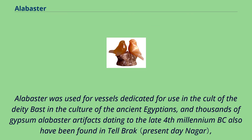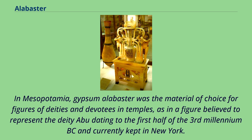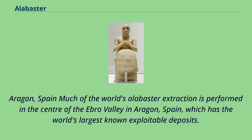Alabaster was used for vessels dedicated for use in the cult of the deity Bast in ancient Egyptian culture, and thousands of gypsum alabaster artifacts dating to the late 4th millennium BC have also been found in Talbrak, in Syria. In Mesopotamia, gypsum alabaster was the material of choice for figures of deities and devotees in temples, as in a figure believed to represent the deity Abu dating to the first half of the 3rd millennium BC, currently kept in New York.